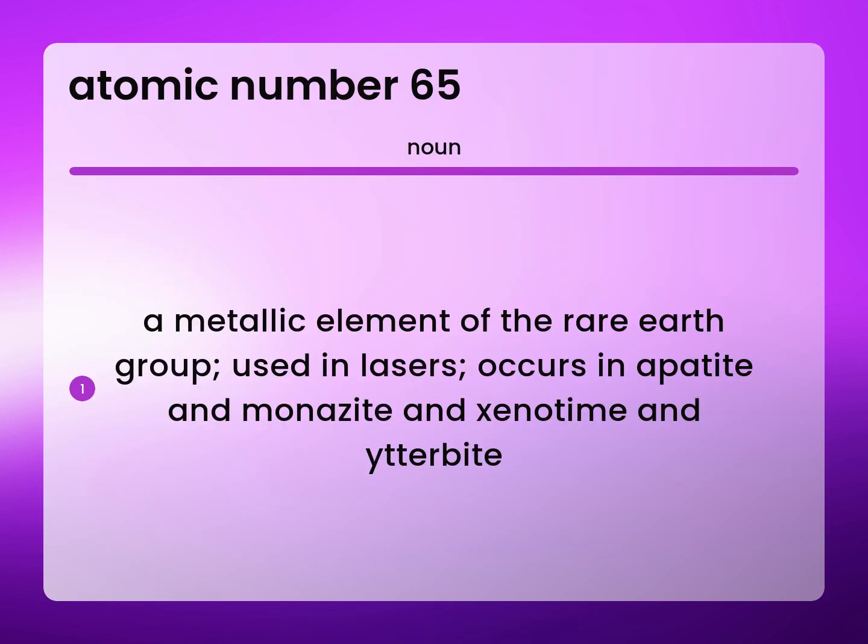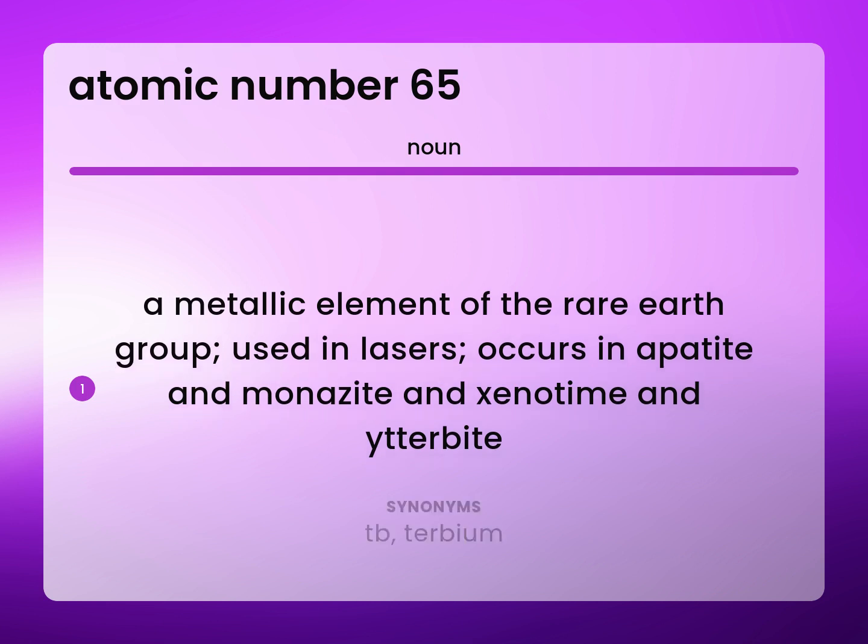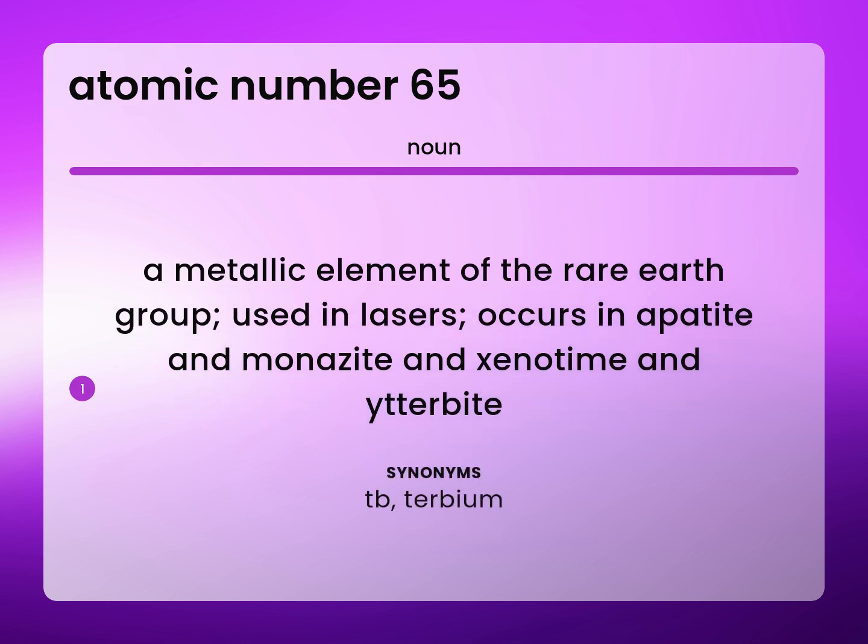A metallic element of the rare earth group, used in lasers, occurs in apatite and monazite and xenotime and aeschynite. TB — terbium.